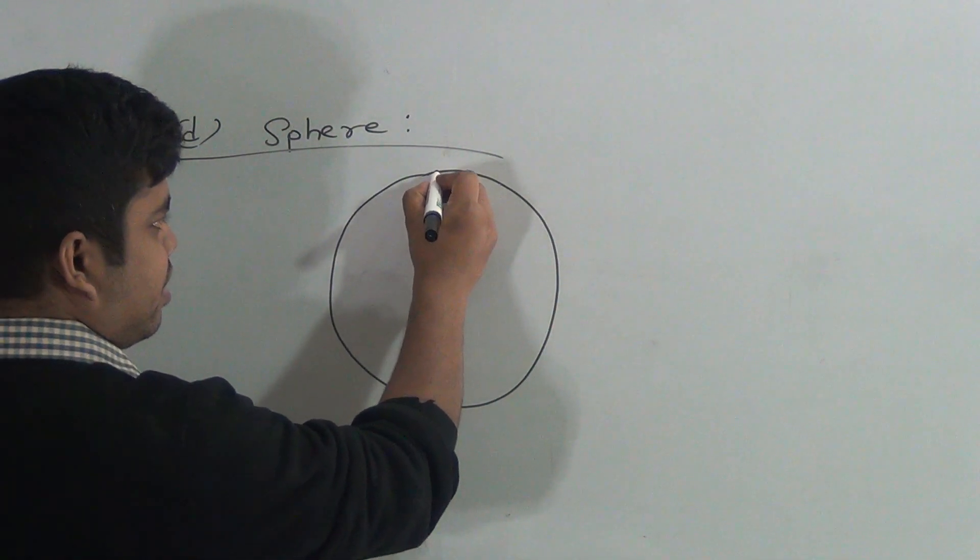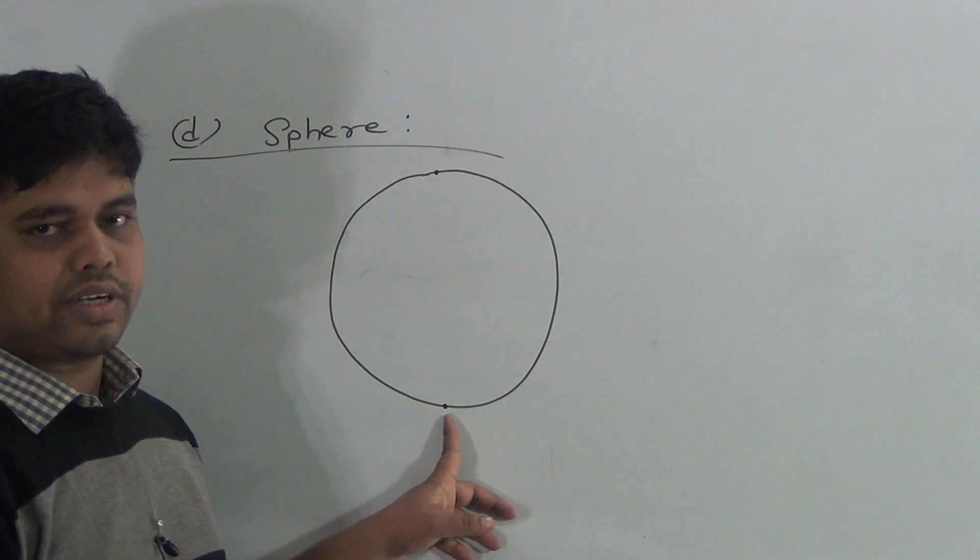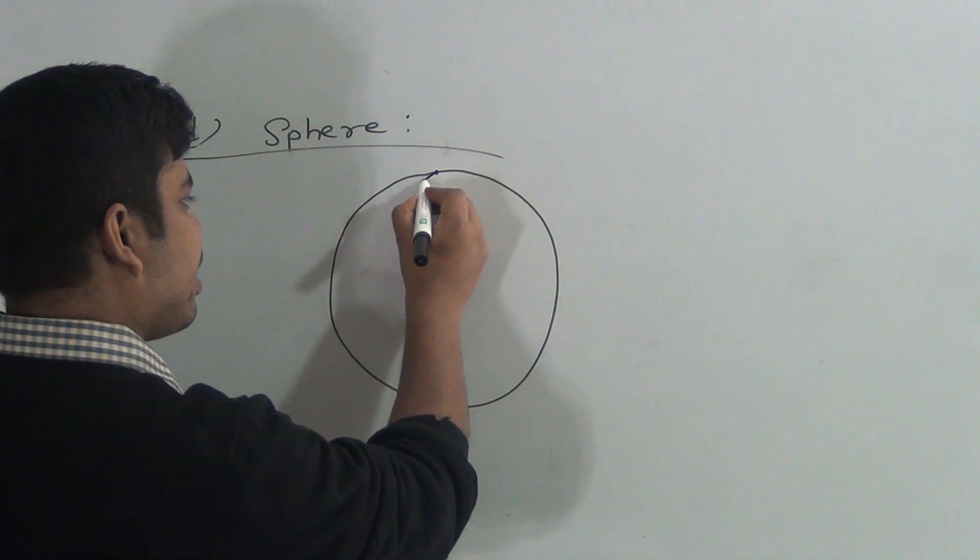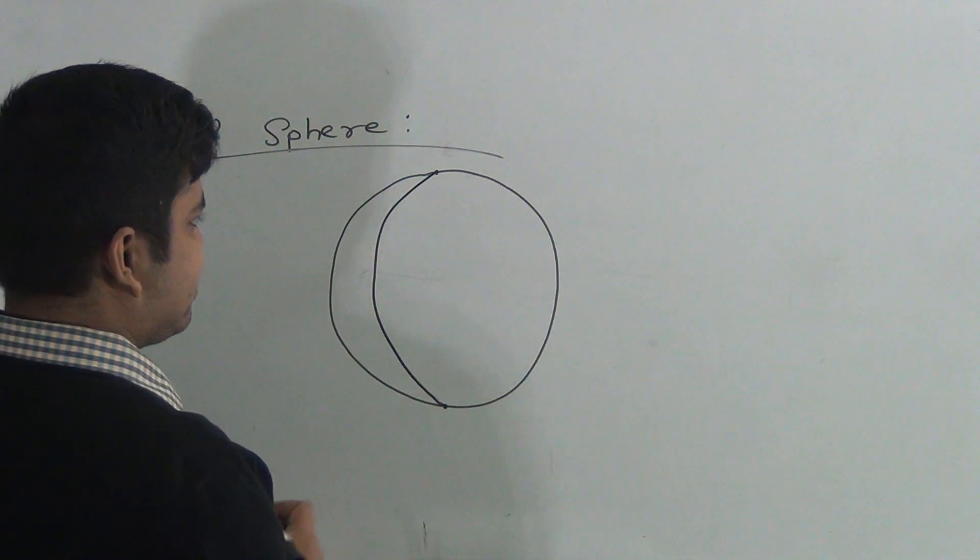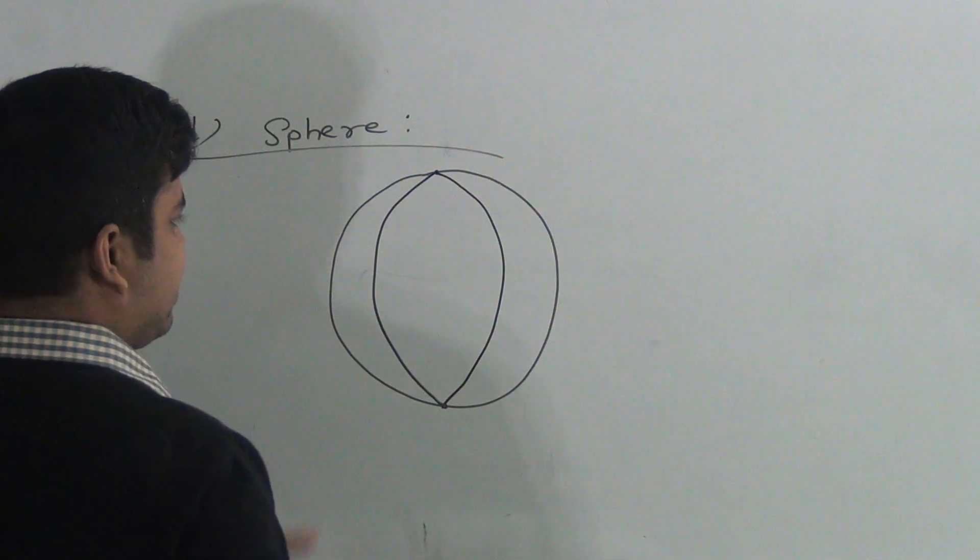Now I take two points above the circle and down of the circle. Now I draw a curved line in this section. I draw another curved line in this section. And this is sphere.